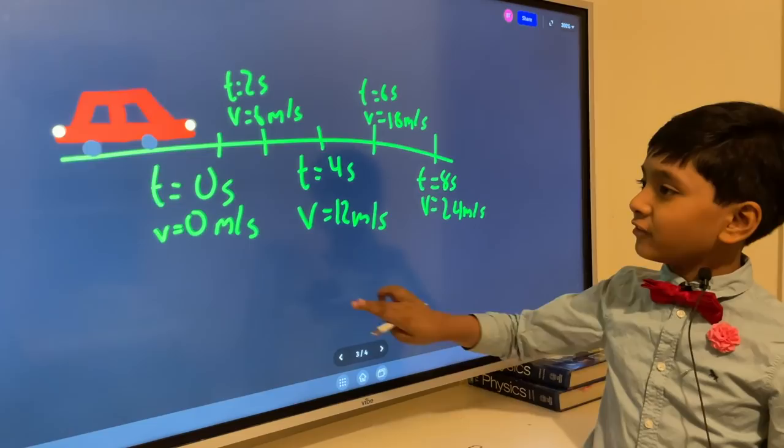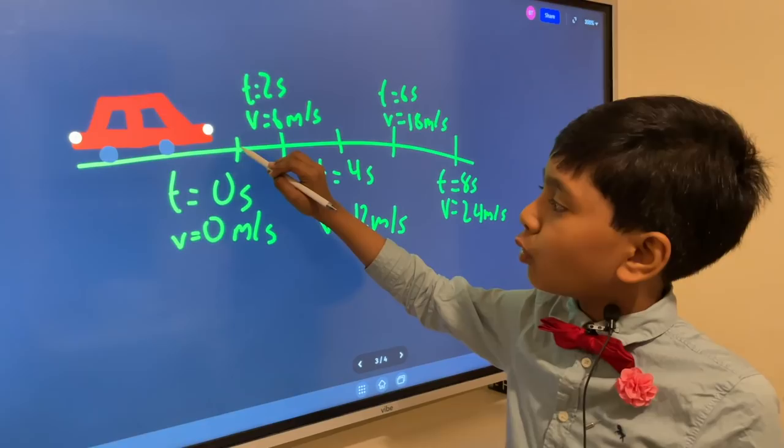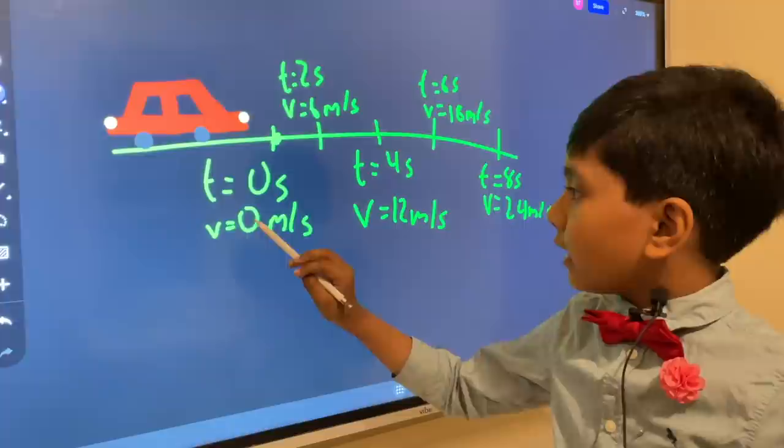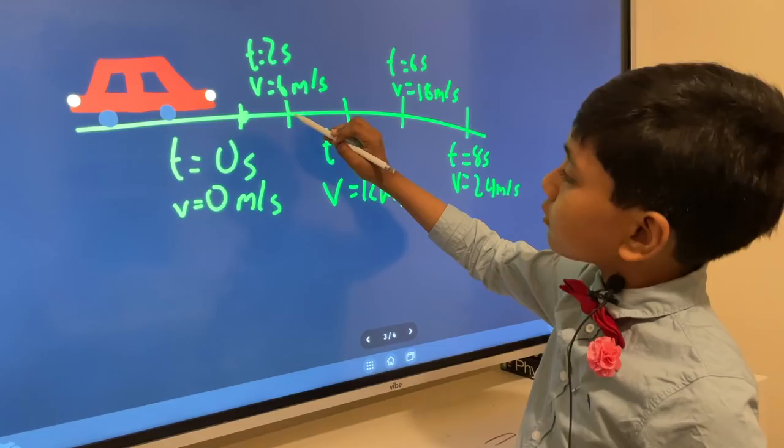So basically, at this point, the car, this otherworldly car with no damn doors, so once you get in, you're trapped. So over here, it's at 0 seconds, 0 meters per second. Then over here it accelerates, after 2 seconds, to 6 meters per second.